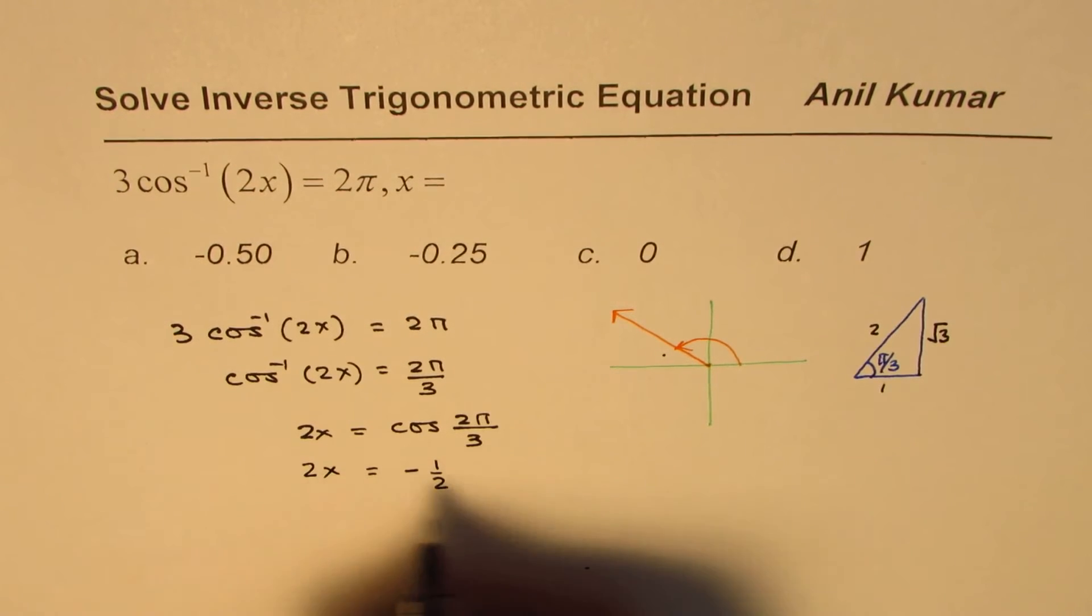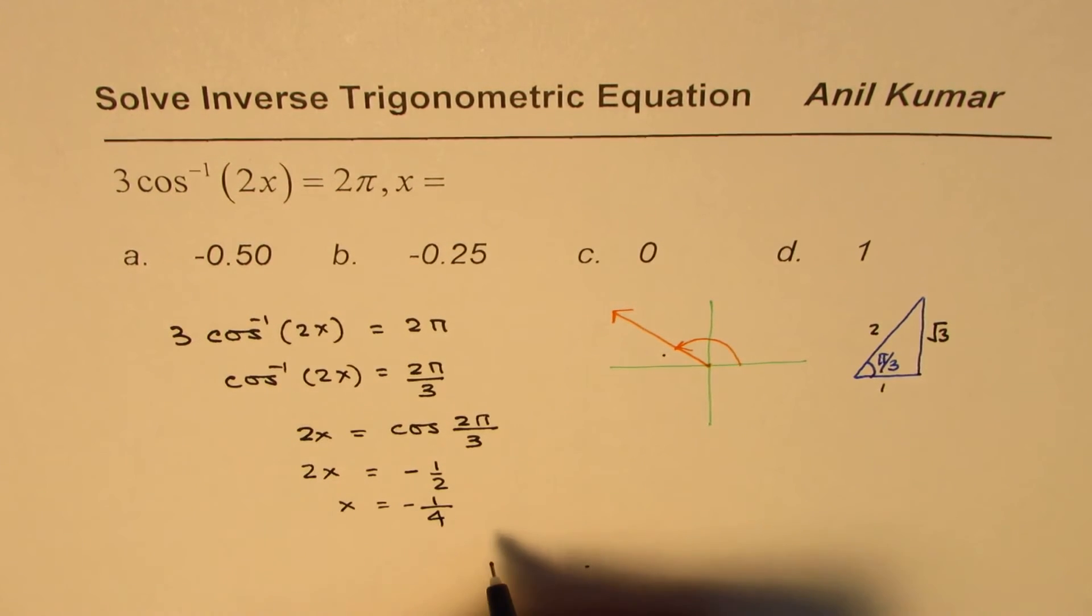So 2x equals negative half, or x equals negative 1 over 4. You divide by 2.